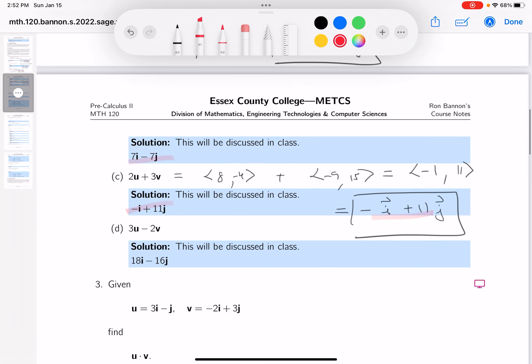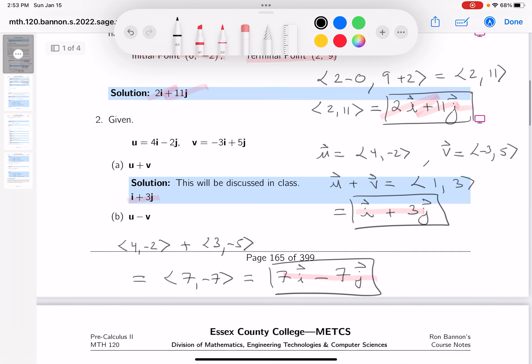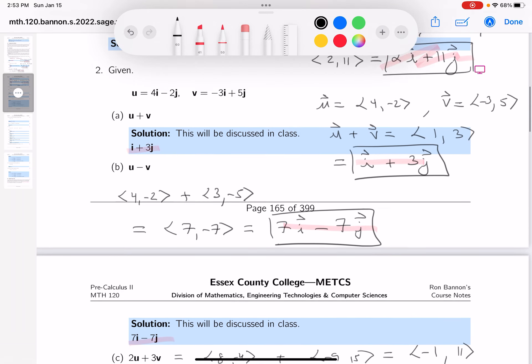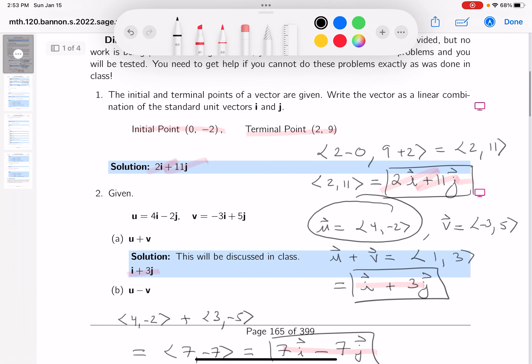Let's go to the next one, part d, the last one. It says 3u - 2v. I can write that as plus -2 of those, a scalar multiple. So 3u: looking back at what u is, it's 4, -2. Three of those would be 12, -6. All I'm doing is taking vector u and multiplying by 3.